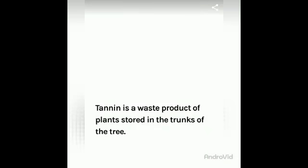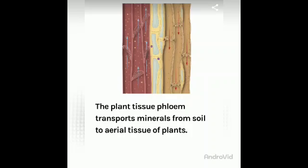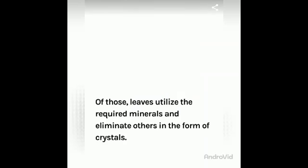Plants also produce tannins — a waste product stored in the trunk of the tree. Additionally, plants eliminate salts and minerals. Plant tissues like phloem transport minerals from the soil to aerial tissues of plants. The leaves utilize the required minerals and eliminate others in the form of crystals.